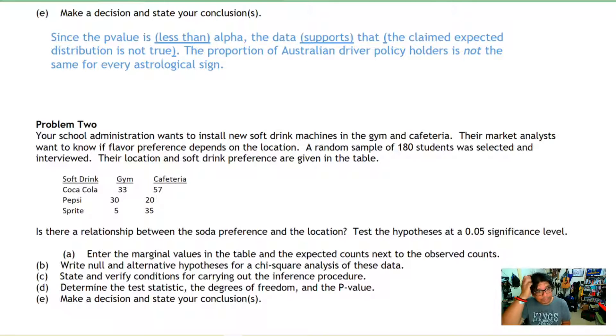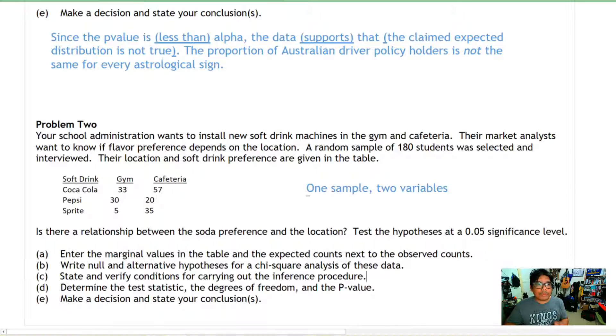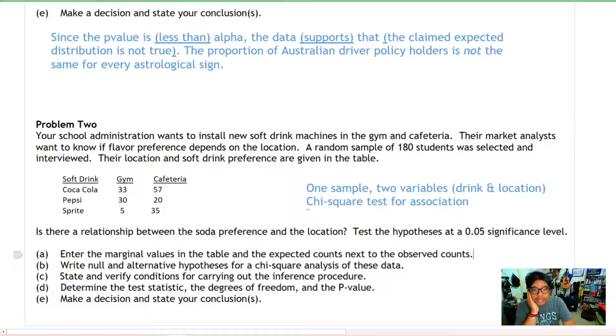Is there a relationship between soda preference and location? Test the hypothesis at a 5% significance level. First, let's know what kind of test this is going to be. We have one sample of 180 students and we're testing two different variables, namely drink and location. When you have one sample and you're testing two variables from that one sample, you're looking at a chi-square test for association. It doesn't matter what the test you use here for chi-square, they're all implemented exactly the same way.